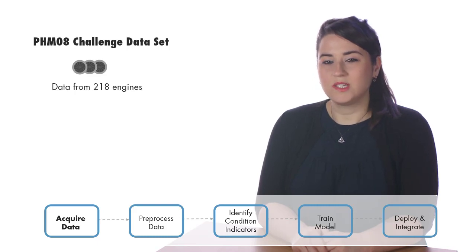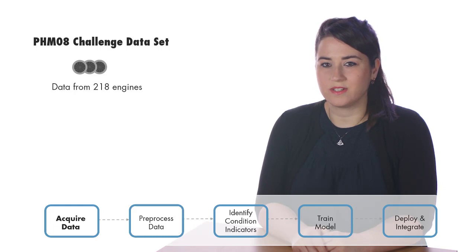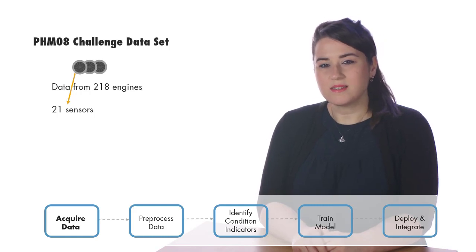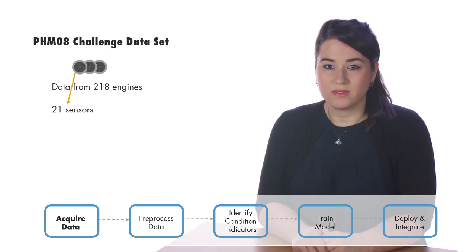This dataset includes the complete histories from 218 different engines, where each engine data contains measurements from 21 sensors. These are sensors such as fuel flow, temperature,